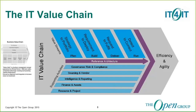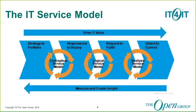There are four value streams defined which provide direct value to the business. These are: strategy to portfolio (the plan), requirement to deploy (the build), request to fulfill (the deliver), and detect to correct (run). There are also five supporting activities: governance, risk and compliance, sourcing and vendor management, reporting, and finance and resource management. All these activities are enabled and orchestrated by the IT for IT reference architecture.